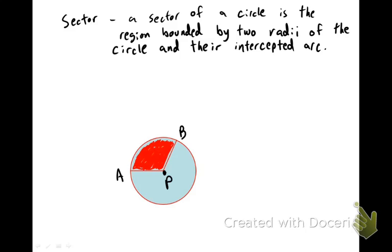A sector is just a part of a circle. So here we have the whole circle P, and if we want to find the area that's bounded by radius AP and radius PB, that's called a sector.